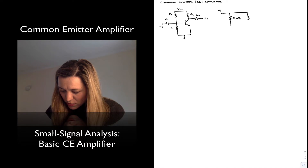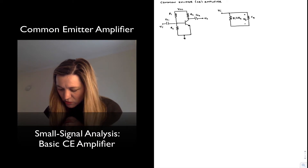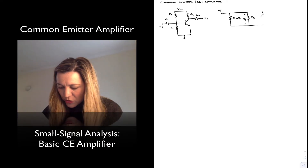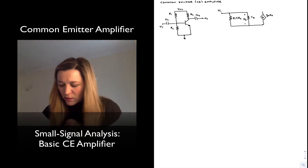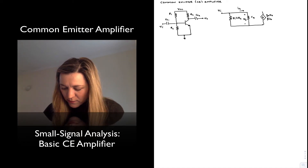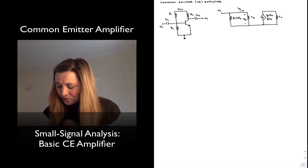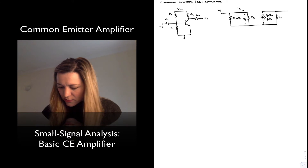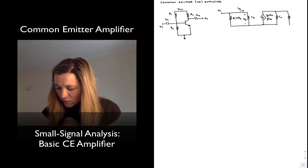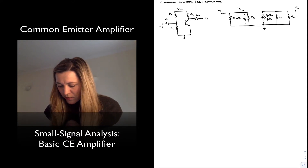We're going to model our transistor using the hybrid pi model. So this will be Rpi with the voltage Vpi across it. From collector to emitter we're going to model it as a current source: Gm·Vpi, which we can also write as beta times the small signal IB, IB being the current into the base. In this case we're also going to model the output resistance ro of the transistor. The collector terminal gets connected to RC, which then goes to VCC — an AC ground.